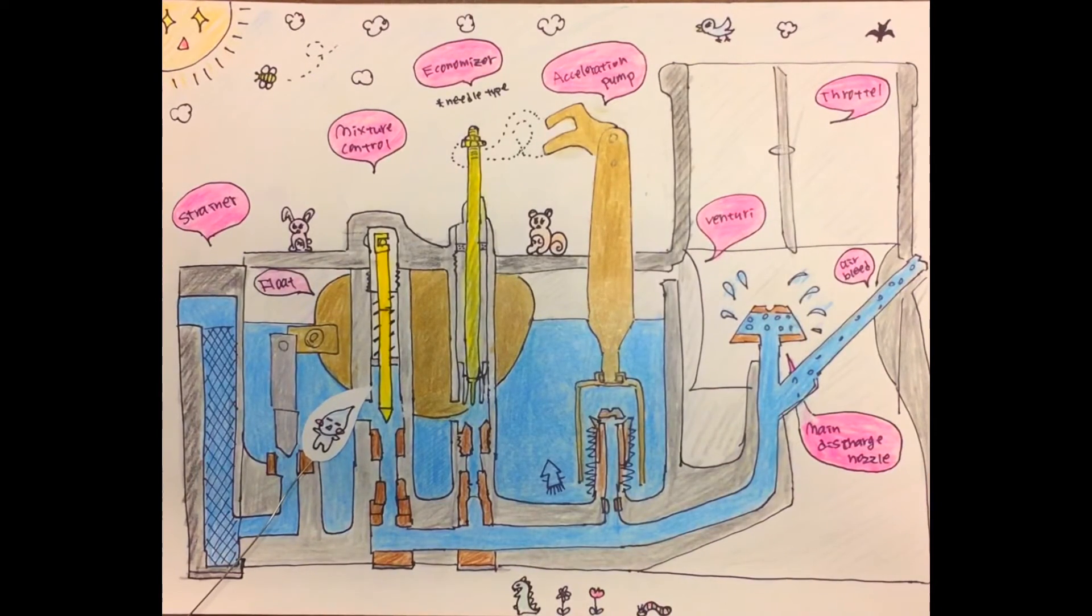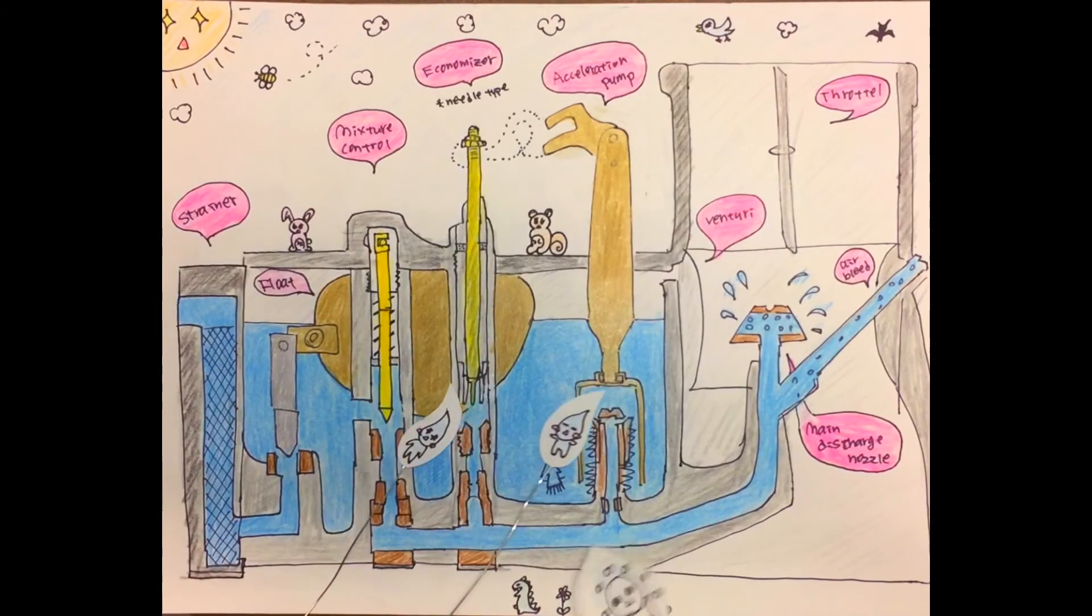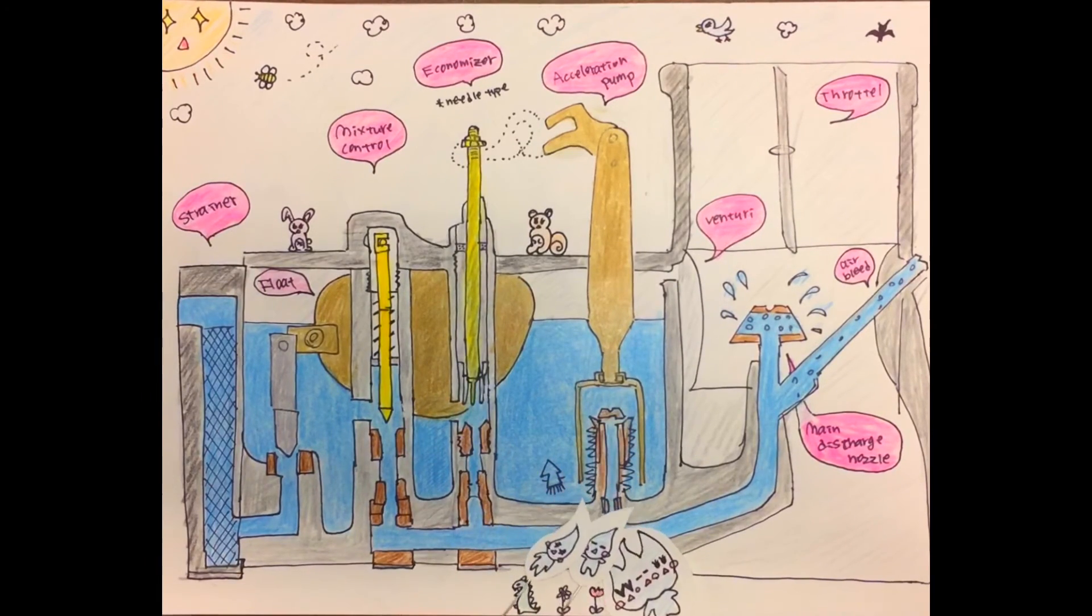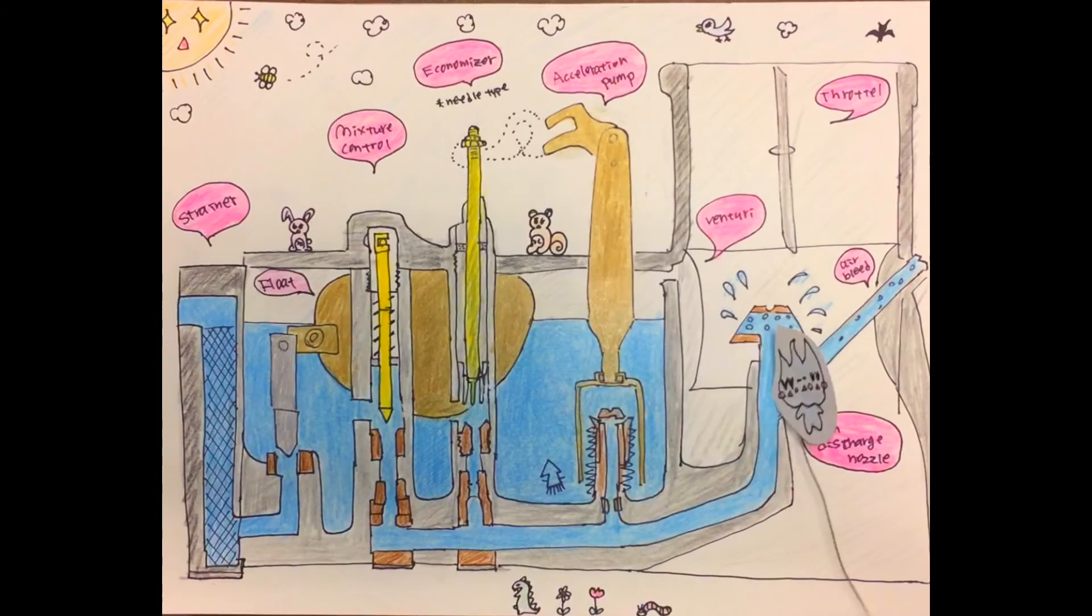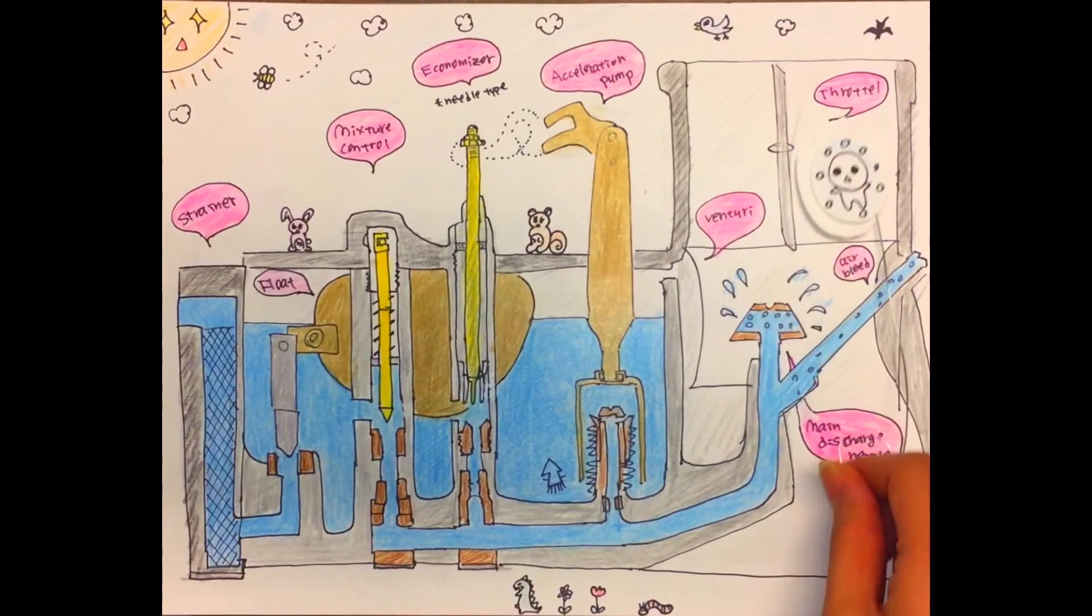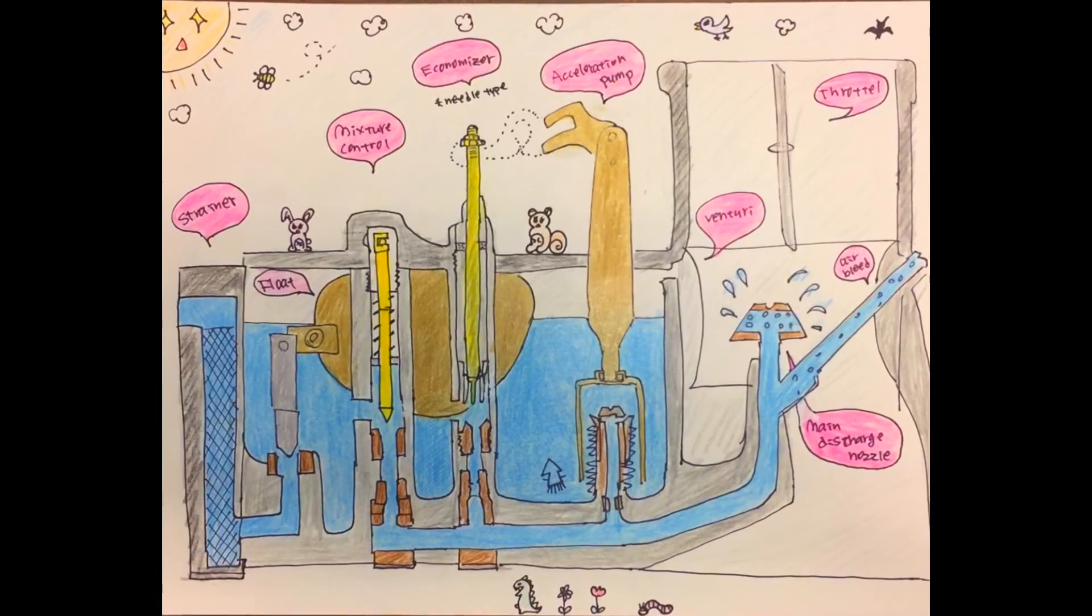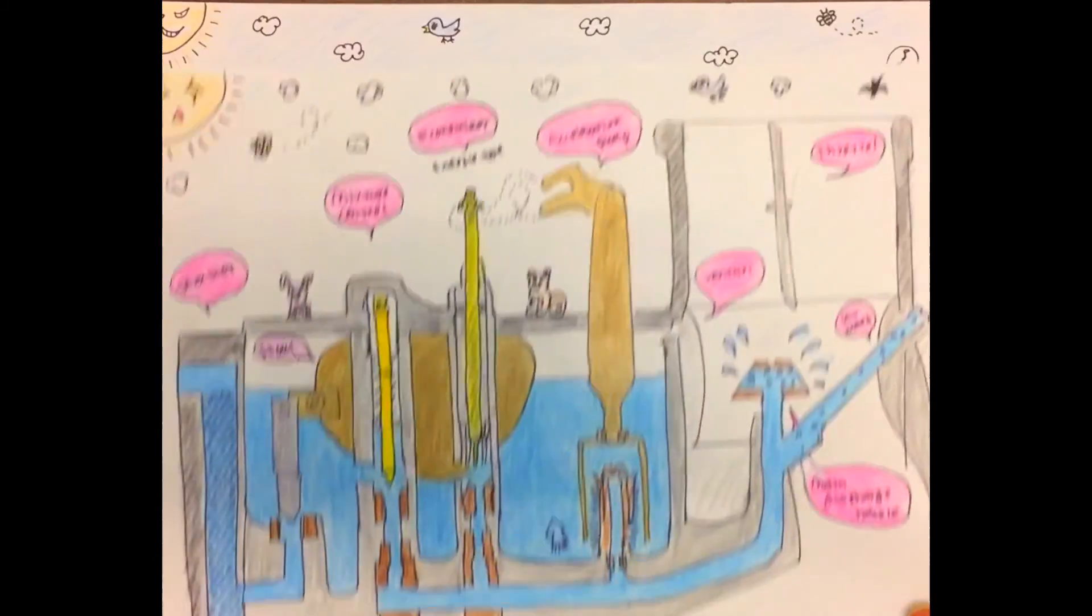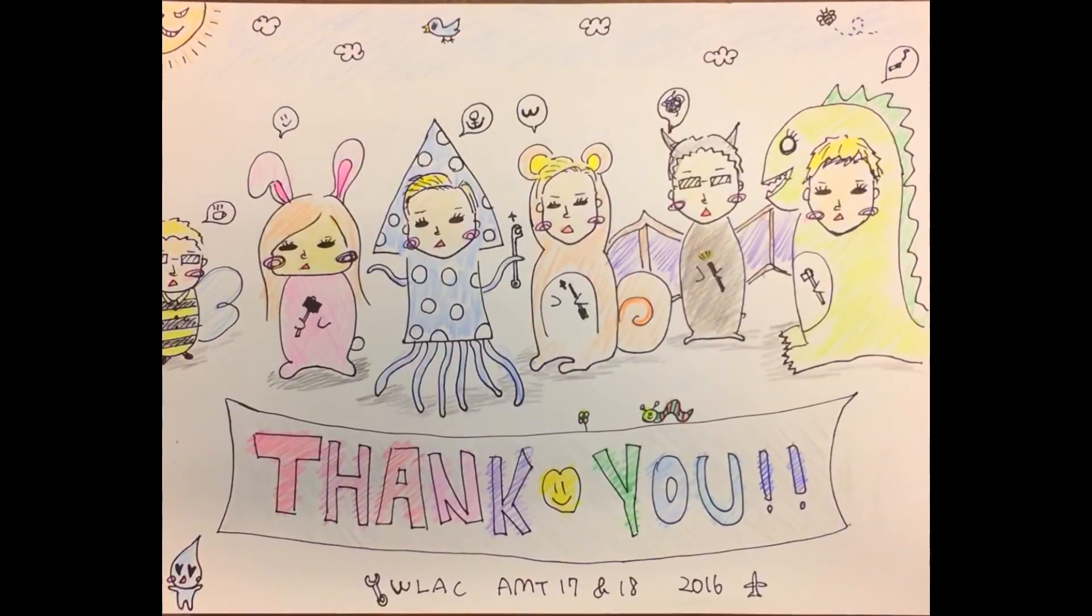For full throttle condition, fuel flows through the economizer and acceleration pump in addition to the main metering jet and mixture control. Then, fuel is discharged. This is how this float type carburetor works. Thank you for watching us and hope you enjoyed it.